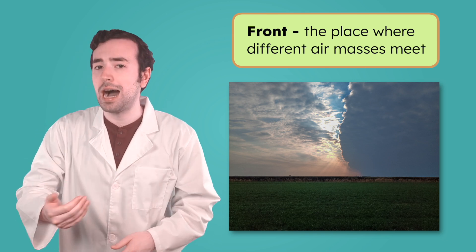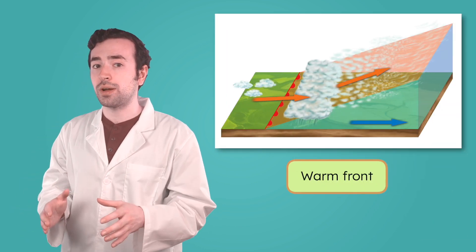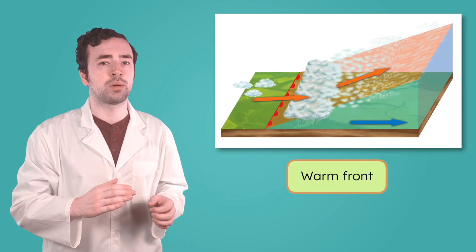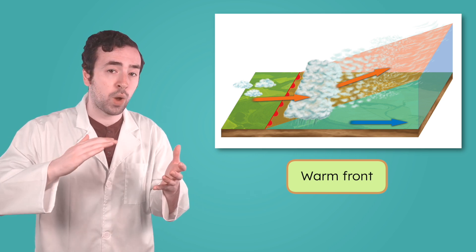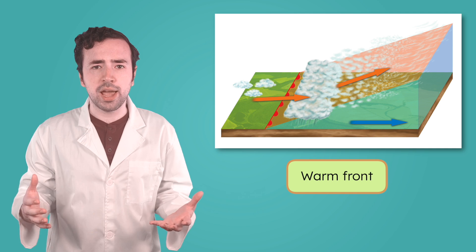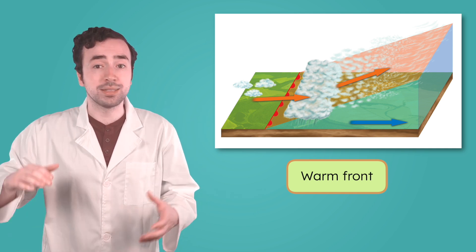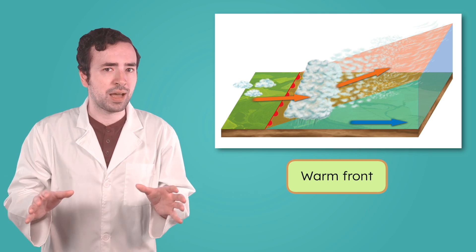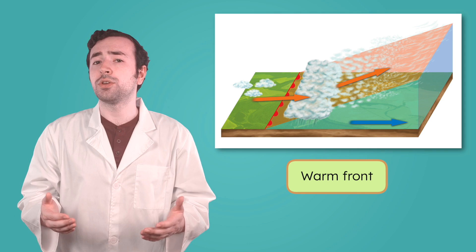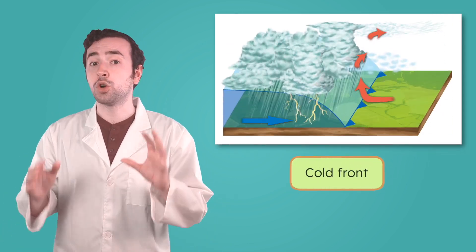There are two common types of fronts—warm fronts and cold fronts. At a warm front, a warm air mass moves into an area with cooler air. Because warm air is lighter, it rises slowly over the cooler air. This rising air forms clouds and often brings steady rain or drizzle. Because it moves slowly, this weather can last for a long time. But after a warm front passes, the weather usually feels warmer, and the skies often clear up.